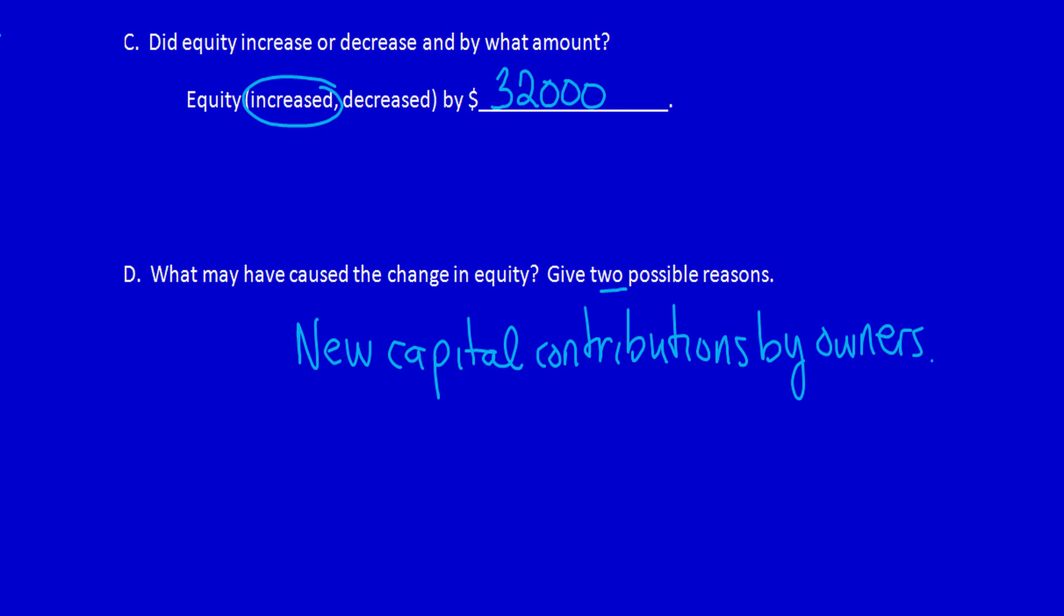Well, if revenues increase by more than expenses, then profit would increase. And if profit increases and we don't pay it out in dividends, then the retained earnings go up and the equity goes up.